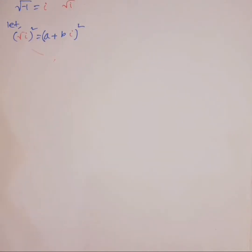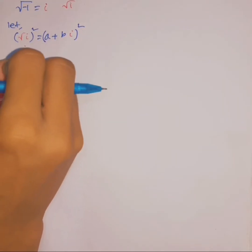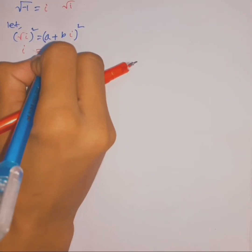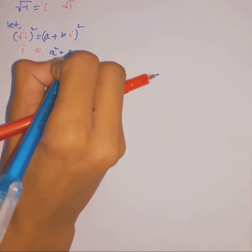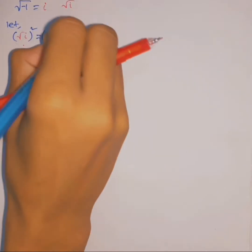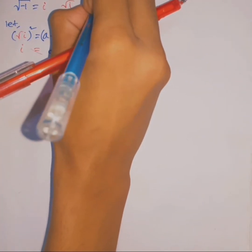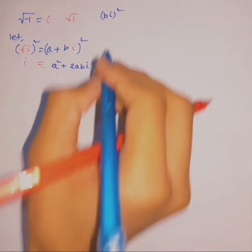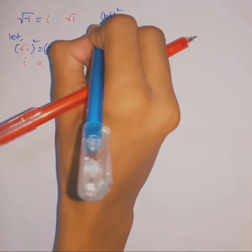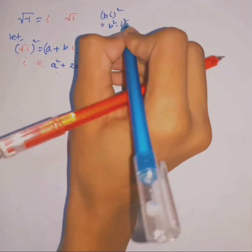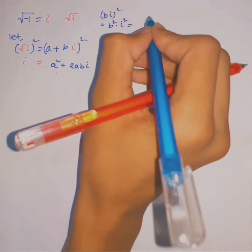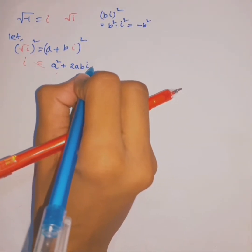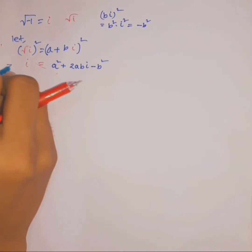Square both sides — the square root and square cancel out, leaving only i on the left. On the right, i equals a squared plus 2ab·i plus bi squared. The bi squared term equals b squared times i squared, and since i squared equals negative one, this becomes negative b squared.